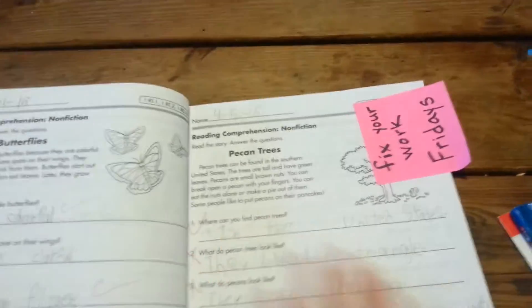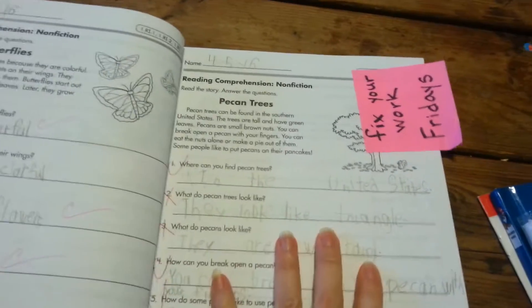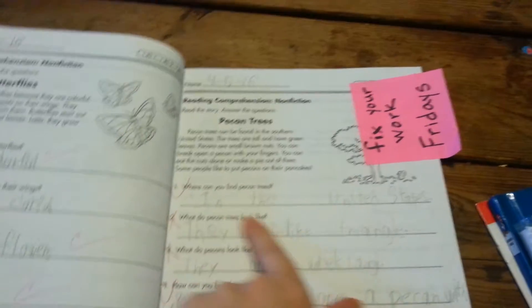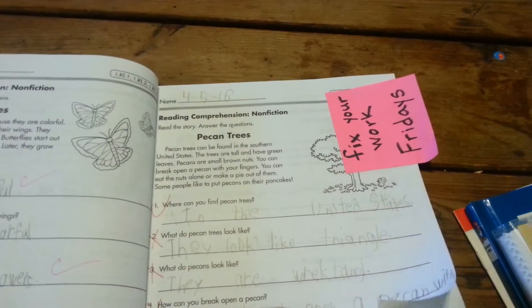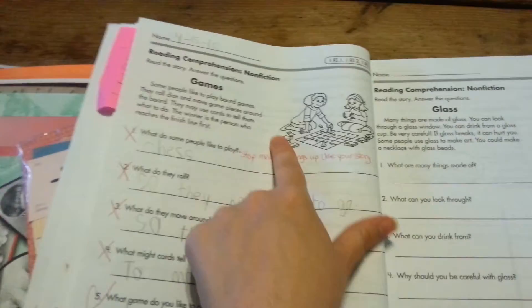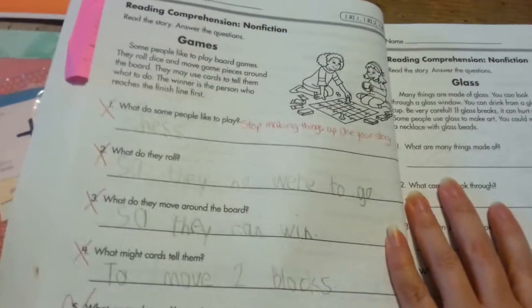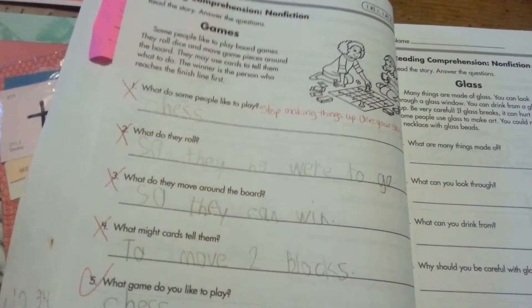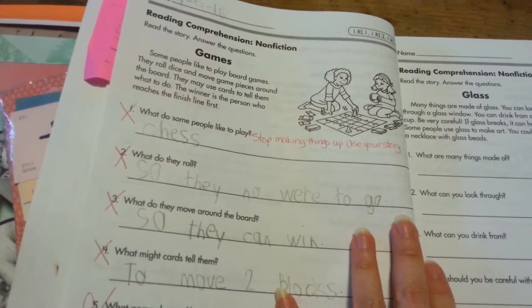That was for his reading and then he also for reading had to do a reading comprehension. And for here, he basically reads and he answers the questions, except when he's answering the questions, he's making up answers to them as he did over here. So he's going to have to redo this when we get to school tomorrow. So that was his reading.